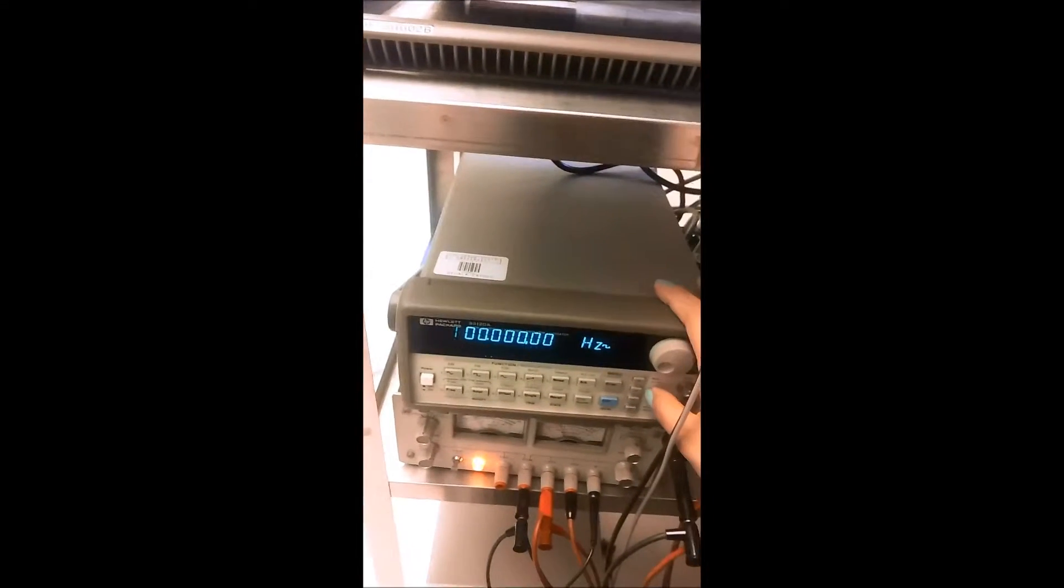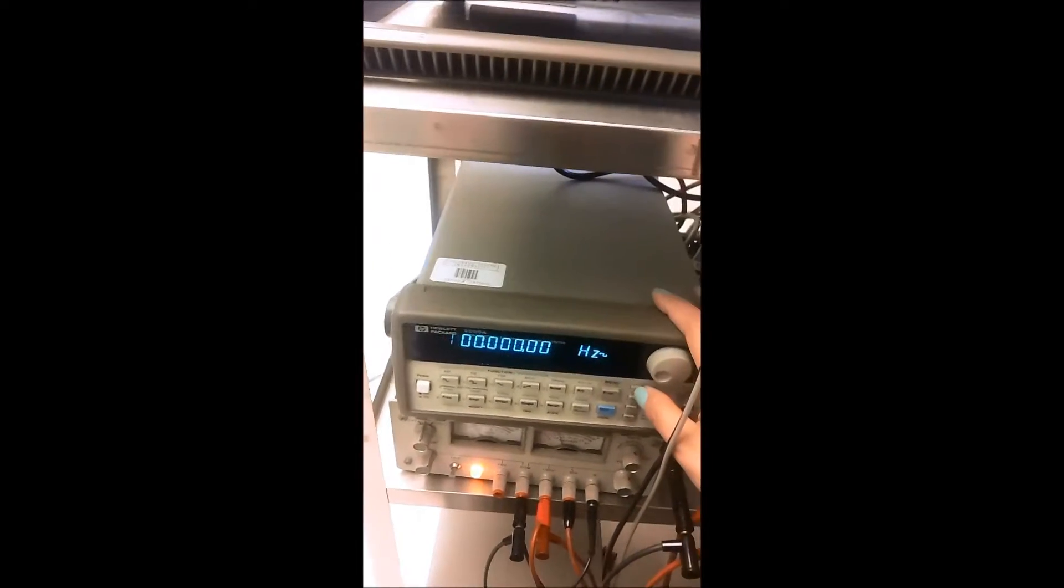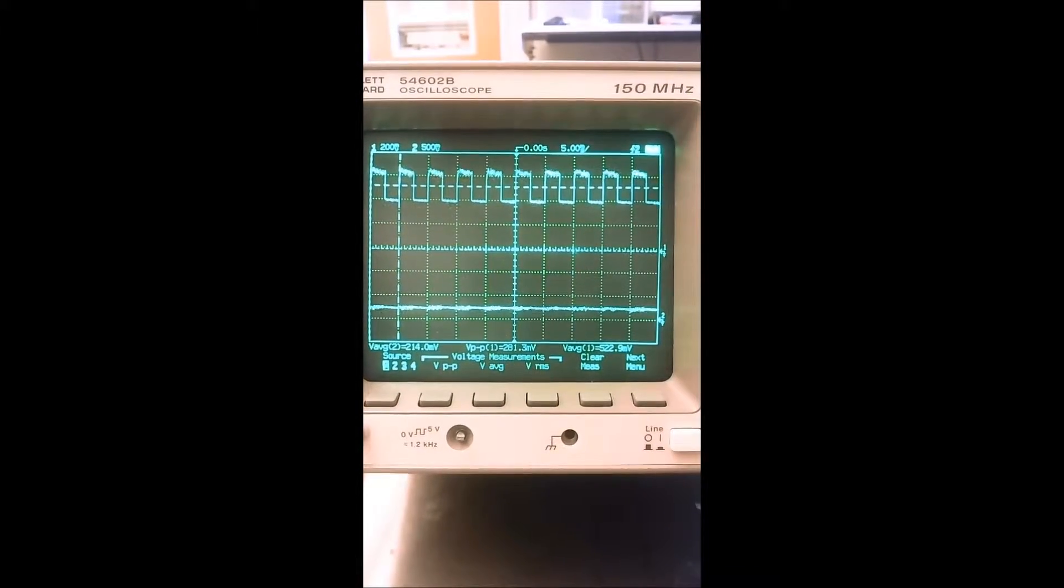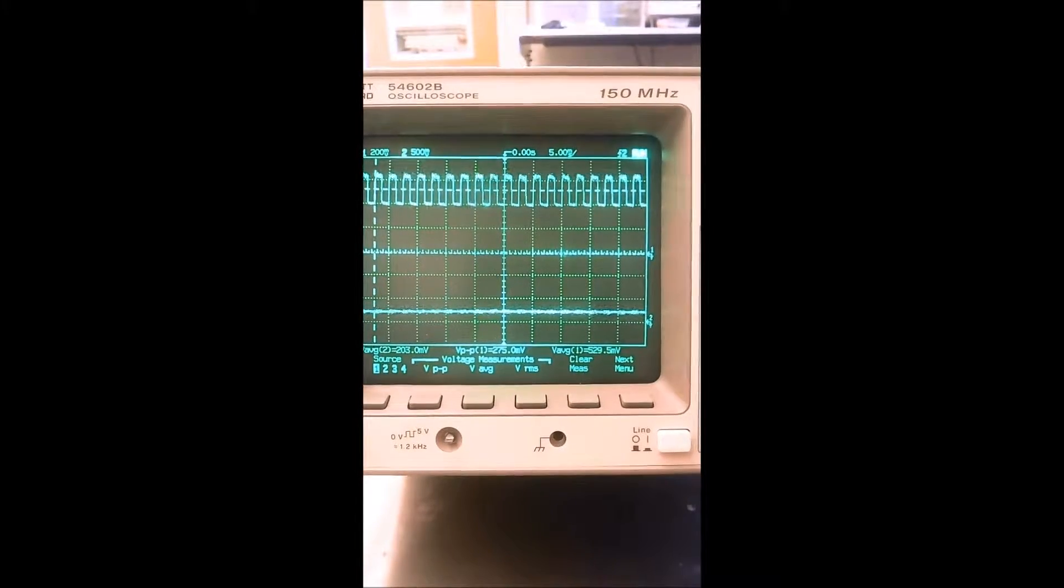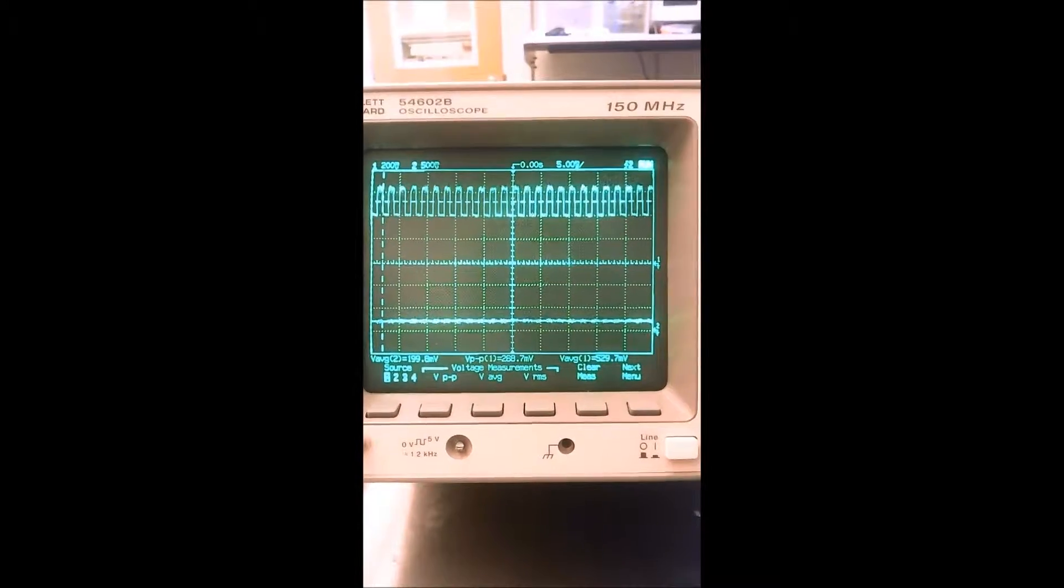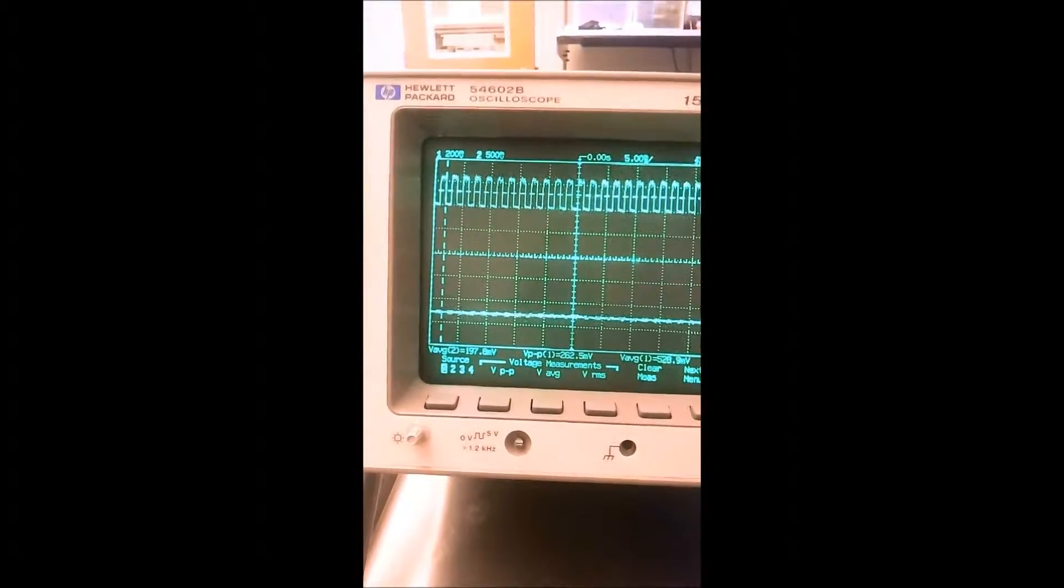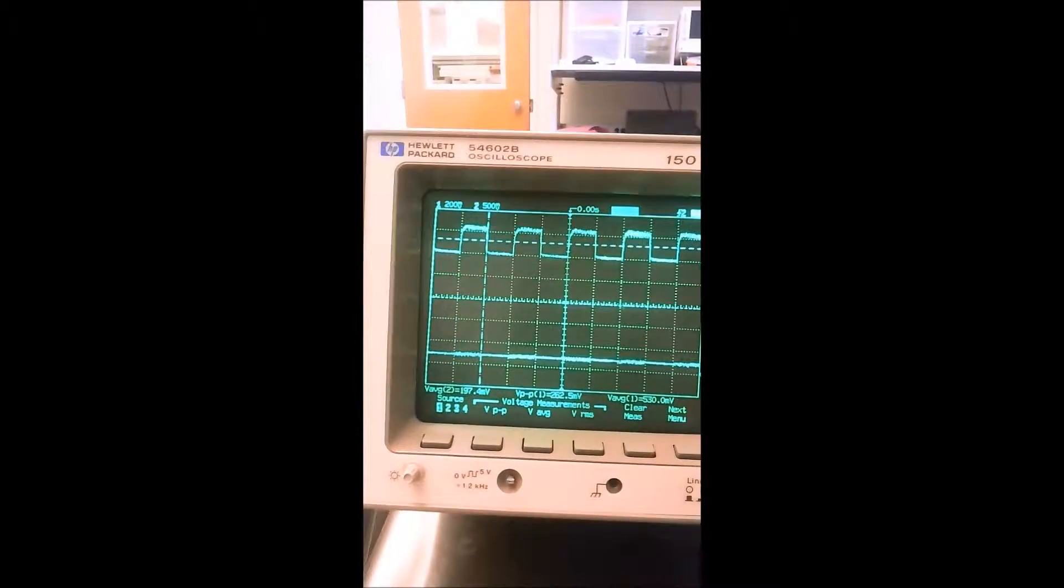So now we're going to adjust the frequency of the laser higher with 100 Hertz increments. Let's see: 200 Hertz, 300 Hertz, 400 Hertz, 500 Hertz. As you can see, the frequency goes up and the top waveform gets a little distorted.